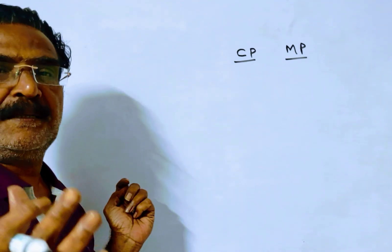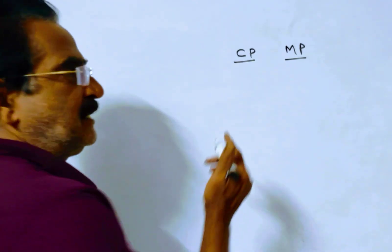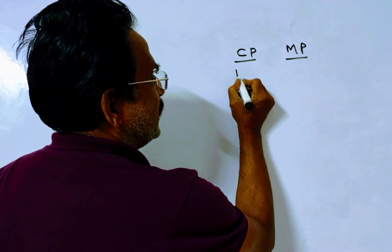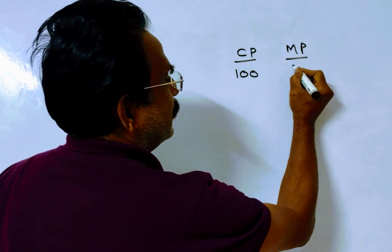Market price is 40 percent above the cost price. This implies if cost price is 100, market price will be 150.